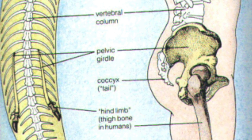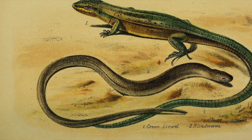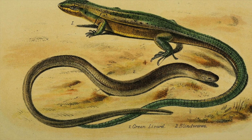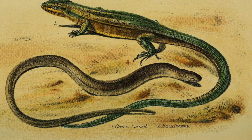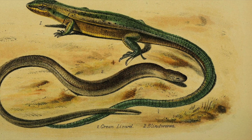In fact, snakes descended from four-limbed ancestors. However, they lost their legs when their ancestors evolved to live and hunt in burrows.